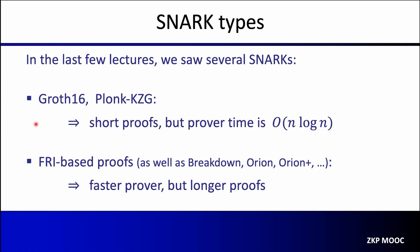In the last couple of lectures, we saw several SNARK constructions. For example, we looked at GROTH16 and the Plonk SNARK, in particular Plonk using the KZG polynomial commitment scheme. These constructions lead to short proofs, but the prover time is not linear — it actually runs in time n log n, where n is the size of the computation. We refer to this as a quasi-linear time prover.